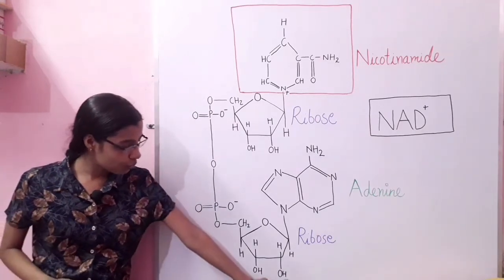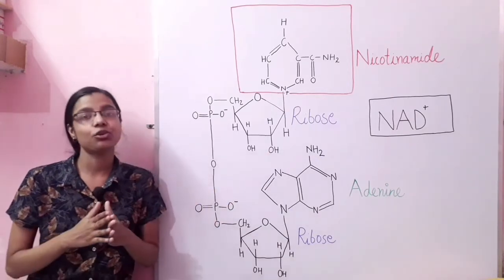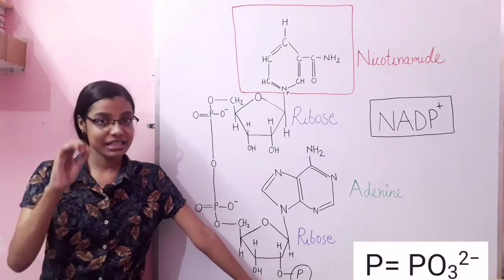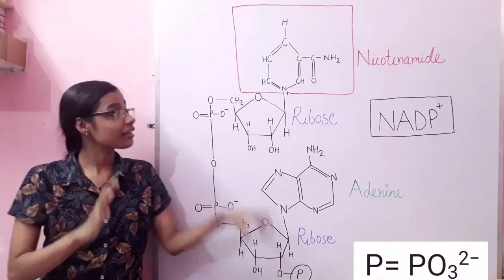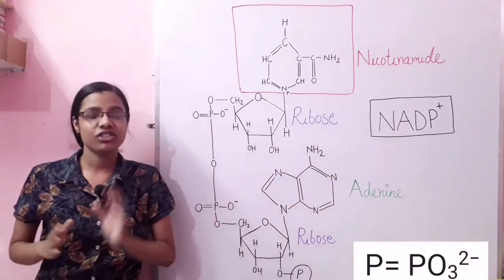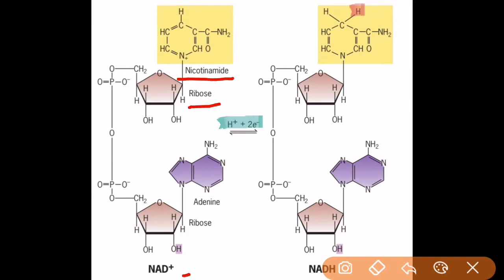If we attach a phosphate group at this position, then NAD gets converted into NADP. So if we add a phosphate to the structure of NAD, the whole structure is called NADP — that is the major difference between NAD and NADP. The structure of NAD consists of a nicotinamide ring, ribose sugar, phosphate groups, and adenine. The nicotinamide ring is the most reactive part of both NAD and NADP, as it participates in most oxidation-reduction reactions.